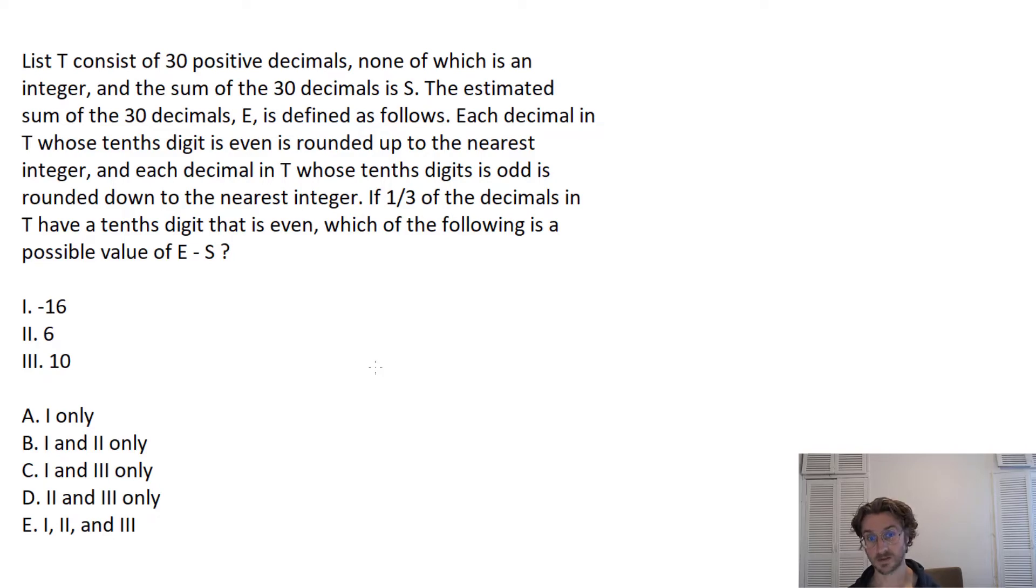List T consists of 30 positive decimals, none of which is an integer, and the sum of the 30 decimals is S. The estimated sum of the 30 decimals, E, is defined as follows: Each decimal in T whose tenths digit is even is rounded up to the nearest integer.